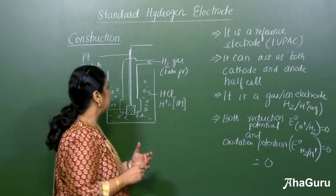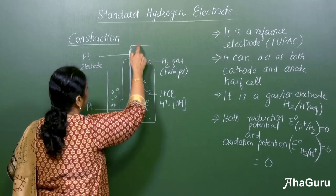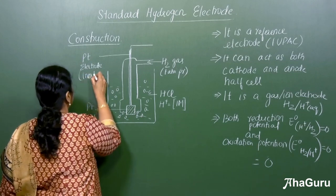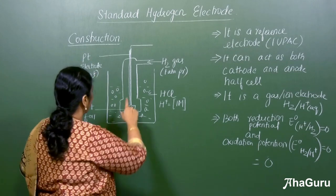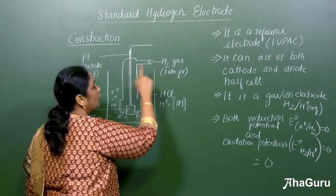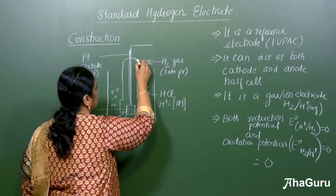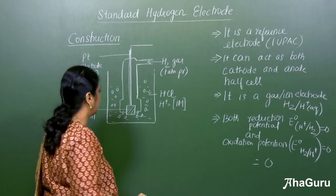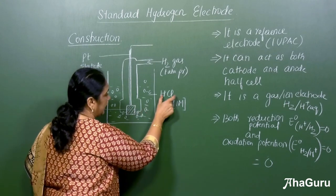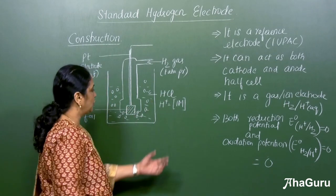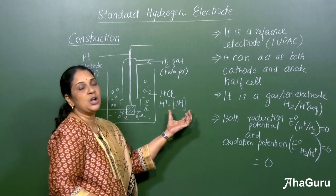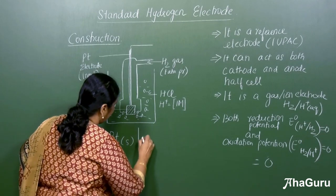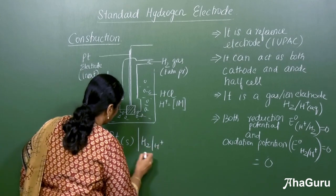Now let us see the construction. We have a glass cell with a platinum electrode, which is an inert electrode that does not take part in the reaction. At the bottom there is a platinum foil, and pure hydrogen gas is passed through an inlet maintained at one atmospheric pressure. It is in equilibrium with an HCl solution where the H⁺ ion concentration is one molar. The cell representation is: Pt(s) | H2 | H⁺.